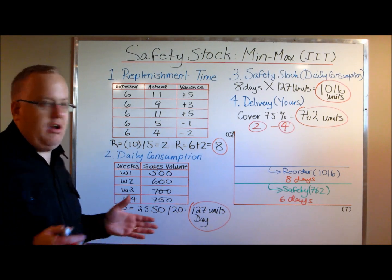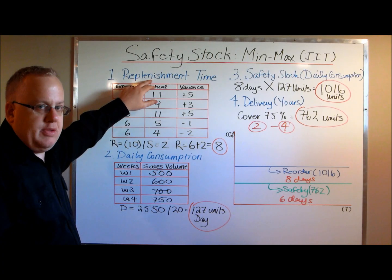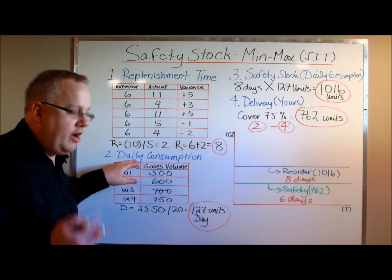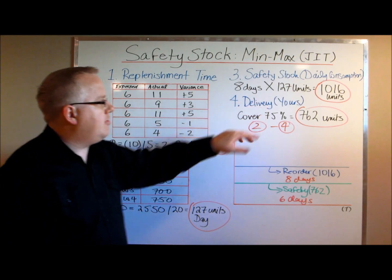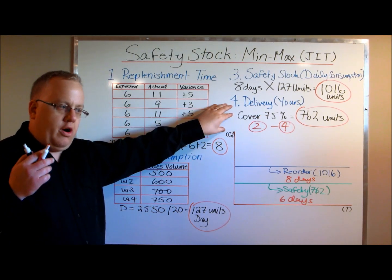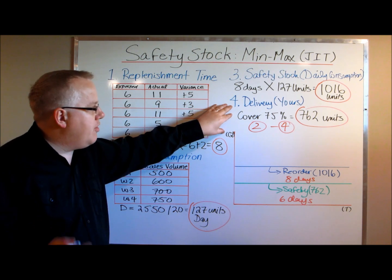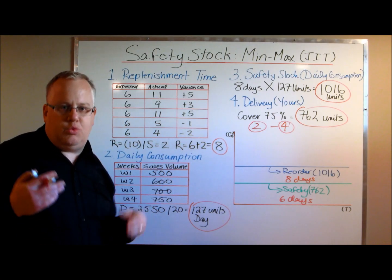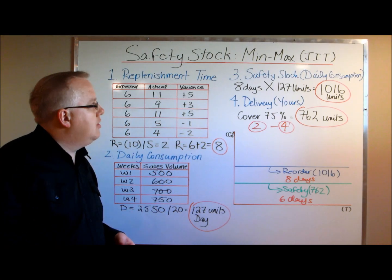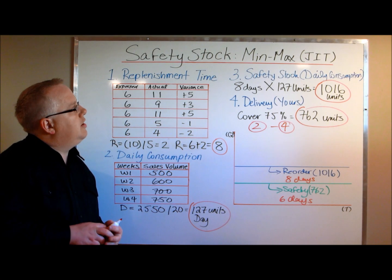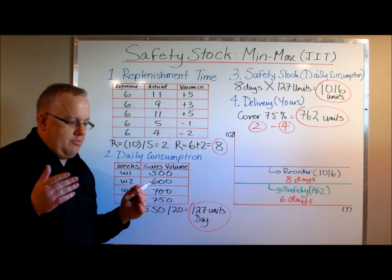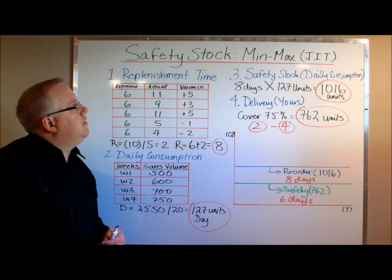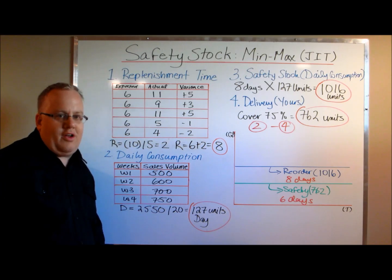That's essentially the entire process: define your replenishment time, account for daily consumption in terms of average sales per day, determine your safety stock, and if you have flexibility with delivery times to your customers, use that to discount the amount you carry in inventory, which helps reduce your financing costs. Make sure you protect your company against the high cost of an inventory stockout. That's it — Ian Johnson, driversuccess.com.